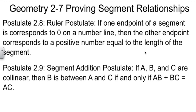And it's what we've been using when we talked about points being between. If A, B, and C are collinear, then B will be between A and C if and only if AB plus BC equals AC.